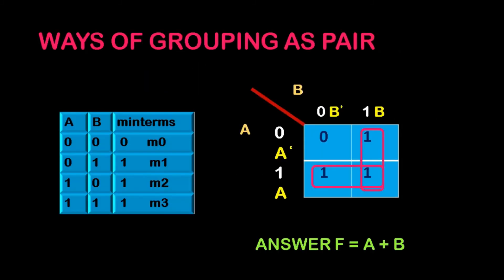Next, ways of grouping as a pair. We have taken a problem here with the values I am giving in the table like 0,0 is 0, 0,1 is 1, 1,0 is 1, and 1,1 is 1. And I have entered the values in the boxes. So in 0,0 combination the value is 0, 0,1 is 1, 1,0 is 1, and 1,1 is 1. So in the K map I have designed like this.